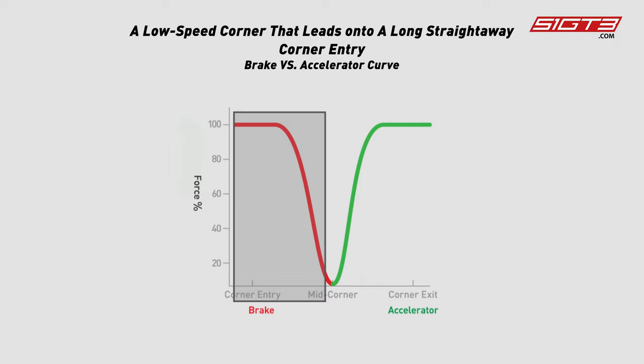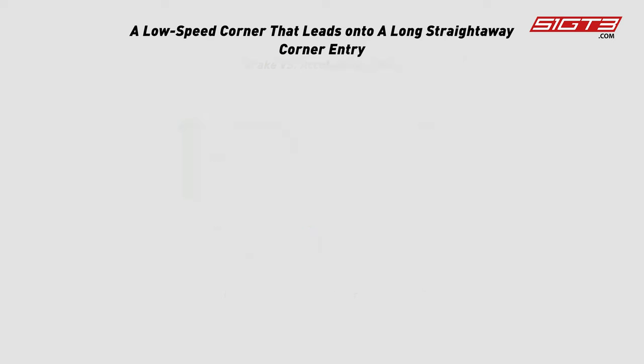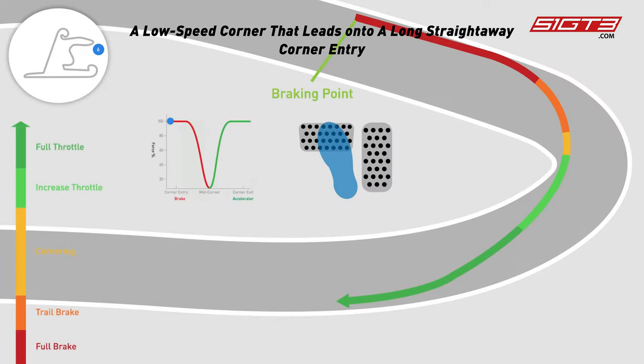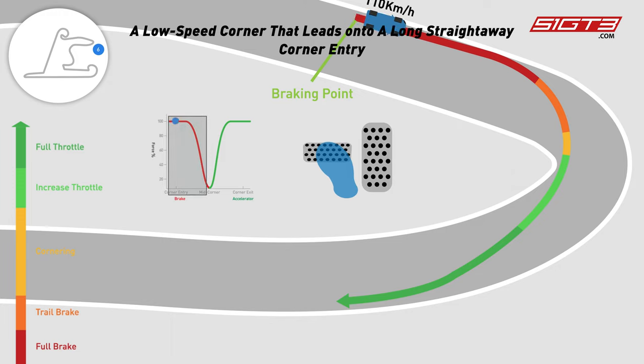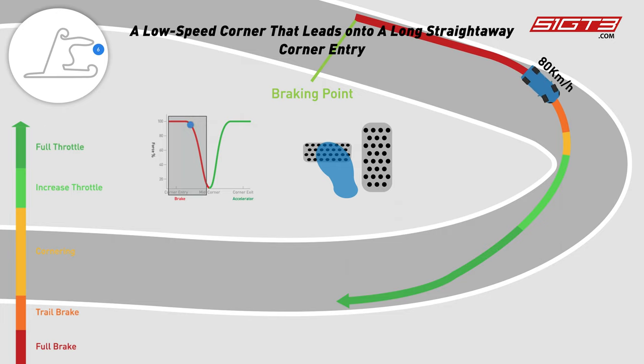Check out the left part of this brake versus accelerator curve, which represents the corner entry phase. Notice how we should change our braking input during this phase. What we want to do here is to locate the latest possible braking point to brake fully, then start to trail brake after entering the corner, so the car can enter the corner at the highest possible speed.